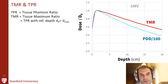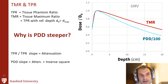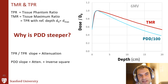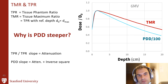Both PDD and TMR are functions of depth and are normalized to the depth of maximum dose. The PDD divided by 100 falls off more steeply than the TMR curve. This is because the TMR curve represents essentially just attenuation, whereas the PDD curve also includes an inverse square factor — as you increase depth with PDD, you're moving further from the radiation source. With the TMR curve, you keep the same constant source-to-point distance and change the depth by moving the phantom closer to the source.